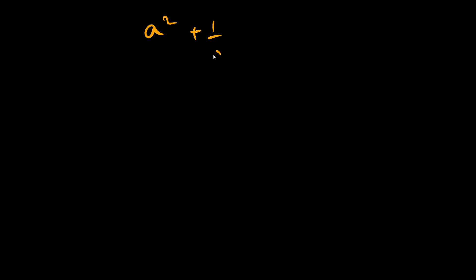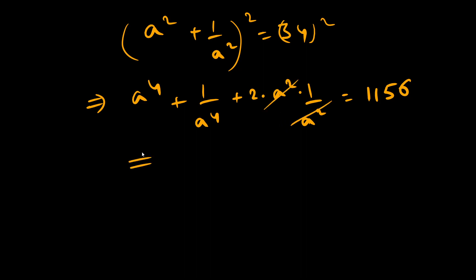a square plus 1 by a square as 34, square both sides. So if I square both sides I will get a raised power 4 plus 1 by a raised power 4 plus 2 a square times 1 by a square. Now 34 square that would be 1156. So from here I will get a raised power 4 plus 1 by a raised power 4. So 1156 minus 2 equal to 1154.